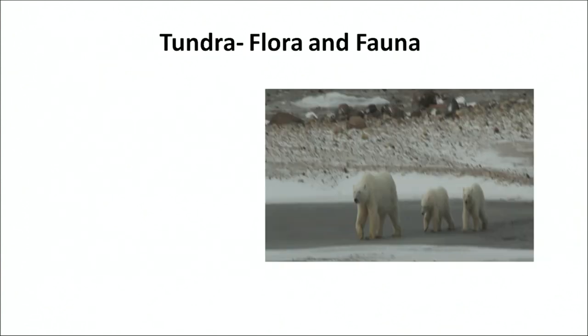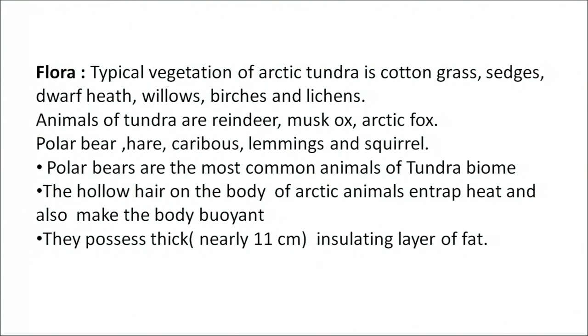These are some of the common animals found in the tundra region. The typical vegetation includes cotton grass, sages, dwarf heath, willows, birch and lichens. The animals are reindeer, musk ox, arctic fox, polar bear, hare, caribou, lemmings and squirrel.